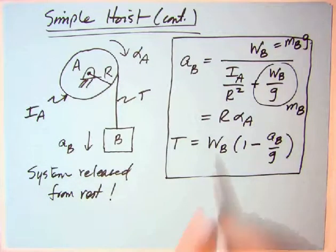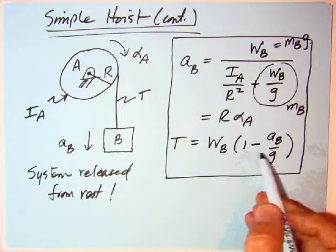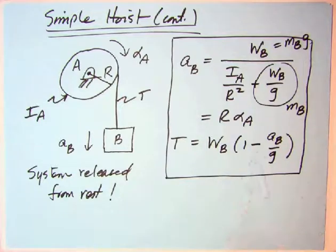Once you find the acceleration, then that's equal to R alpha A. Solve for alpha A, so you've got it. And then the tension is WB 1 minus AB over G. Notice the difference between the previous one, the one pulling up. There's a positive there. So again, when you have a block, the tension is only equal the weight if it's a statics problem. This is not a statics problem. T does not equal W. Either it is less than W if it's accelerating down, it's greater than W if it's accelerating up. Big, big point. Hope these two have helped you. This is about all you can do with rotational to translational motion.